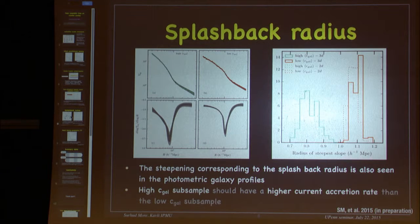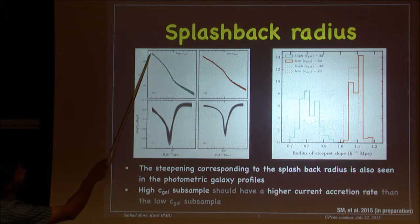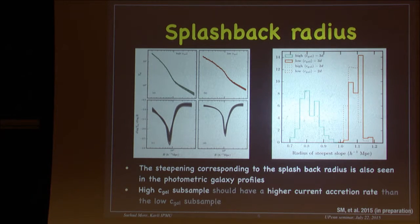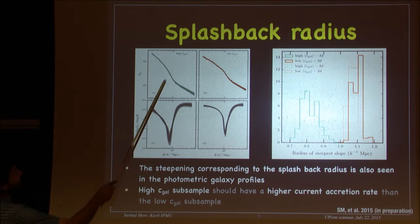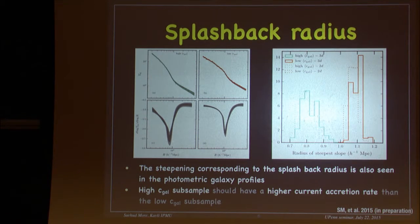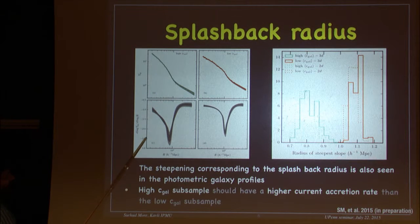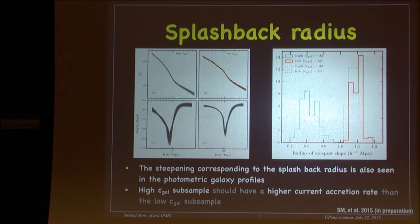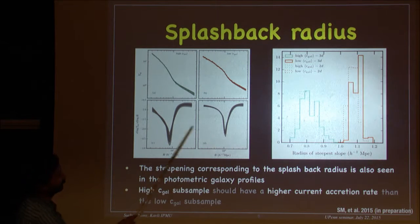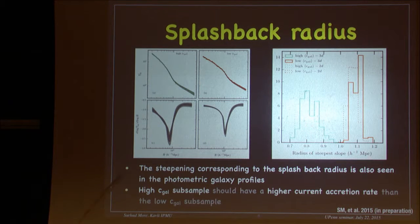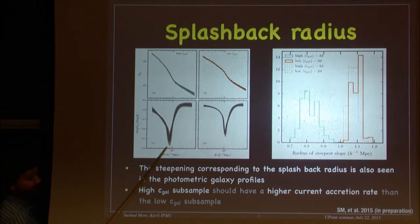I have also looked at the splashback radius. Using the SDSS photometric sample around these clusters, this plot shows the surface number density of SDSS photometric galaxies around the two cluster subsamples — high C_gal and low C_gal. We computed the logarithmic slope of the surface density profile and see a sharp steepening related to the splashback radius that Andre discussed. This splashback radius is different for the two subsamples: one is a high-accretion cluster, the other is low accretion, and the high C_gal subsample has a splashback radius at a lower value.